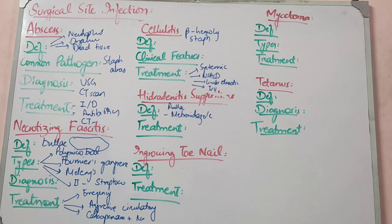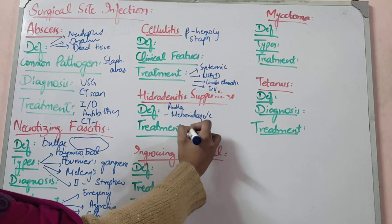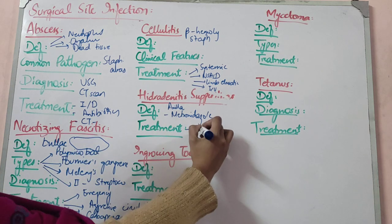If antibiotic therapy doesn't work, you have to do widespread surgical excision. You need to cover the area with a skin graft. Widespread surgical excision and skin grafting is the definitive treatment.